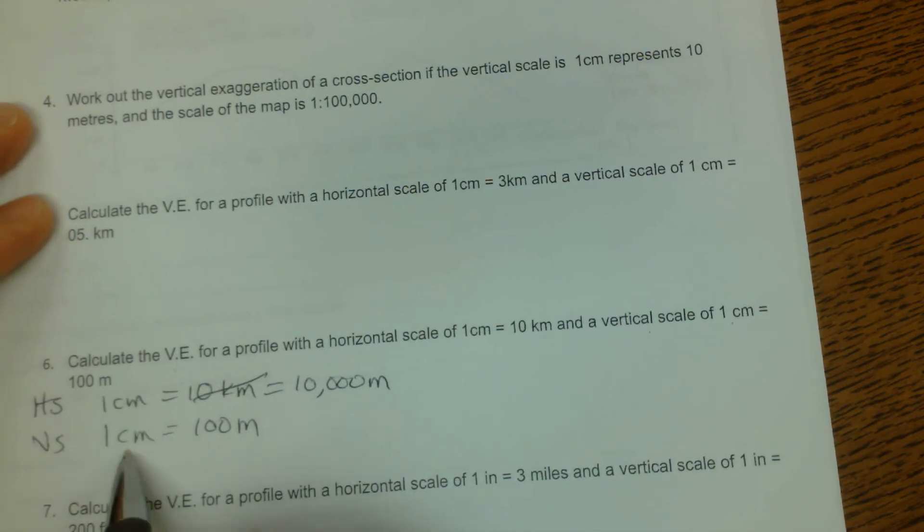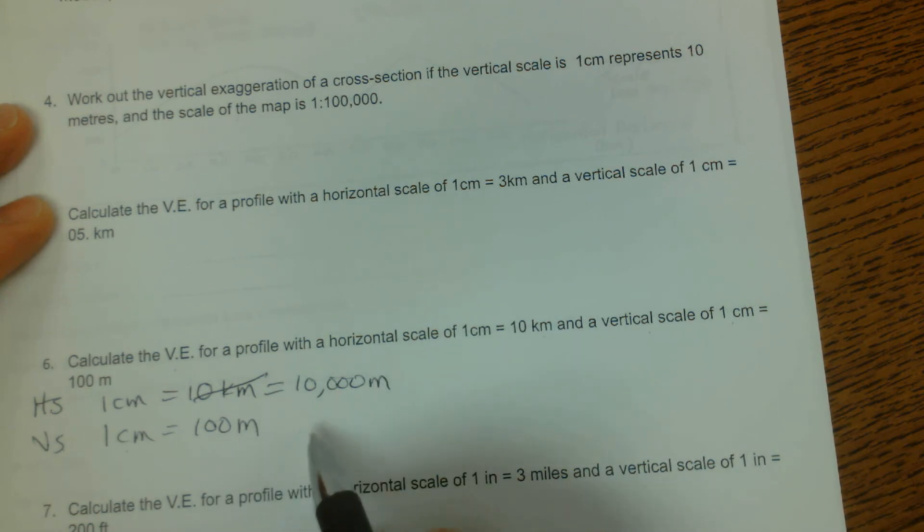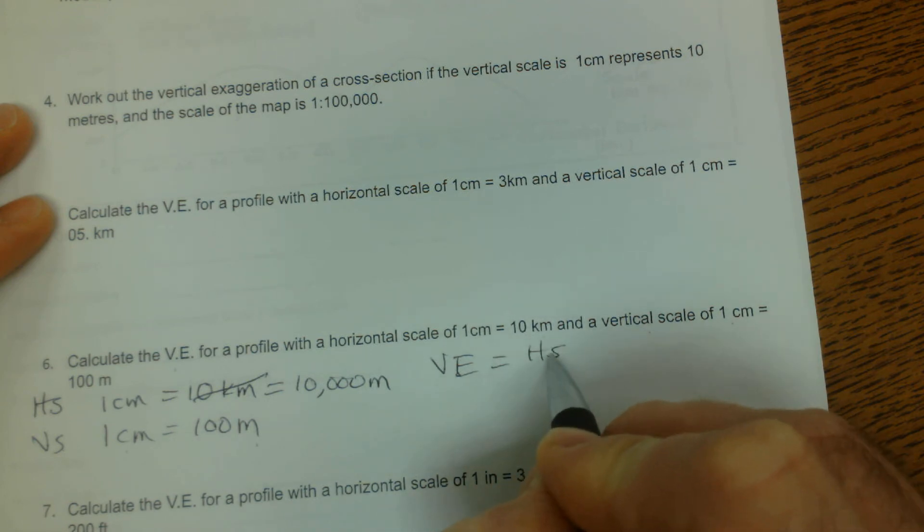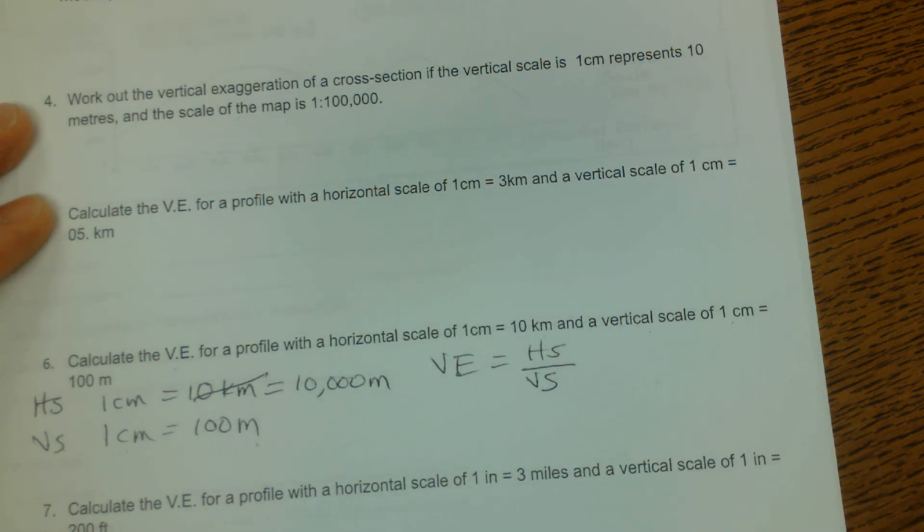Once I have these two units the same, and these are both in meters, or whatever unit they are, as long as these two are the same, and these two are the same, I know that my vertical exaggeration is equal to the horizontal scale divided by the vertical scale.